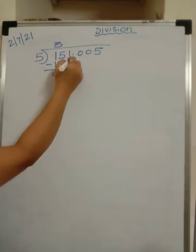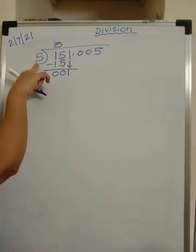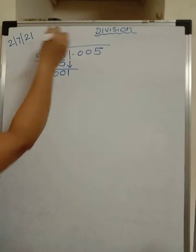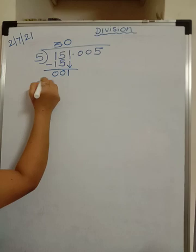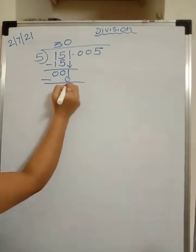Now as per rule you are going to take this 1 down. Is 1 divisible by 5? No, it is not divisible. So 5 zeros are 0. This step is very important. 1 minus 0 is 1.